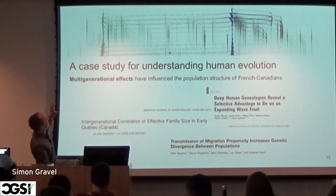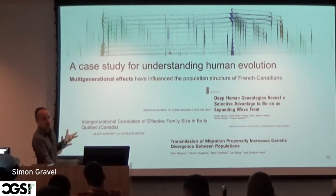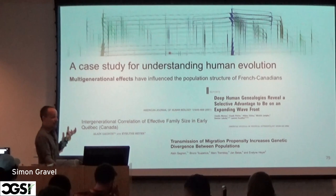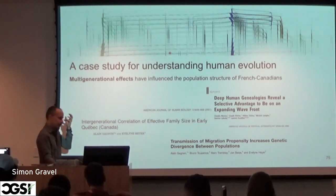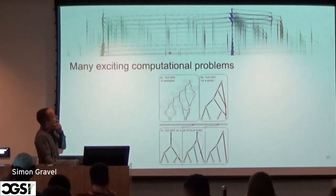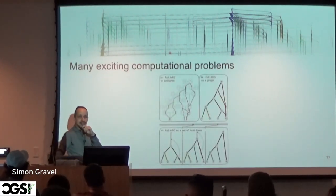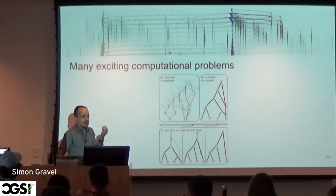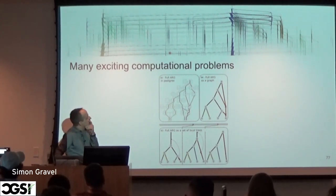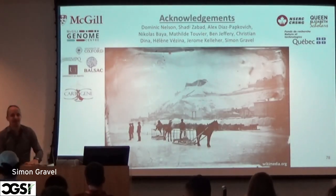To conclude: these kinds of datasets are really cool for understanding human evolution. There are lots of important questions about meiosis, complex traits, and history — but also a lot of really cool computational problems that are well-posed and just need a good solution.